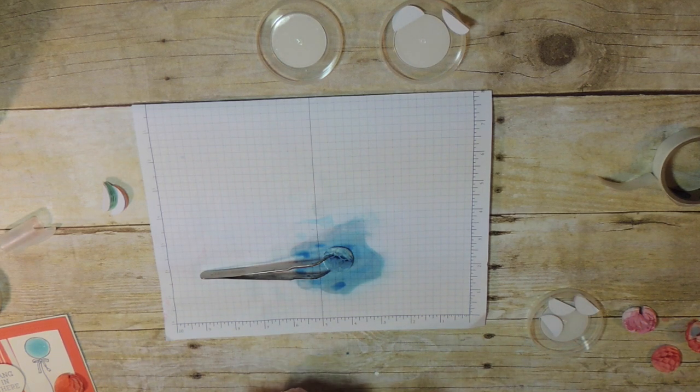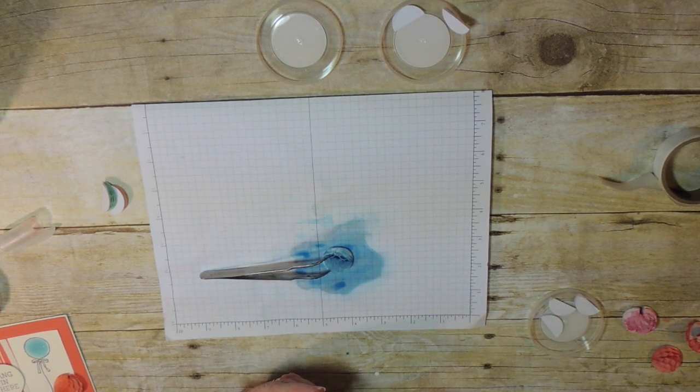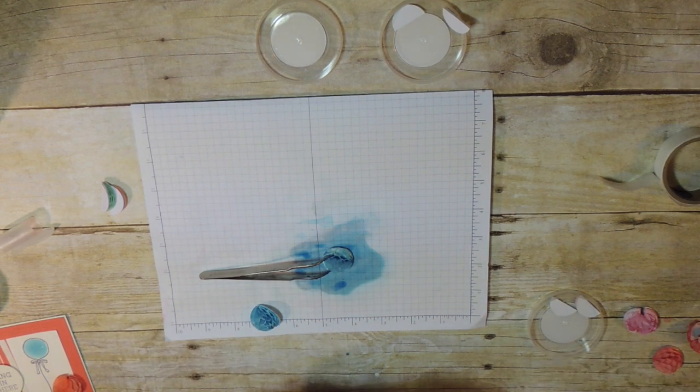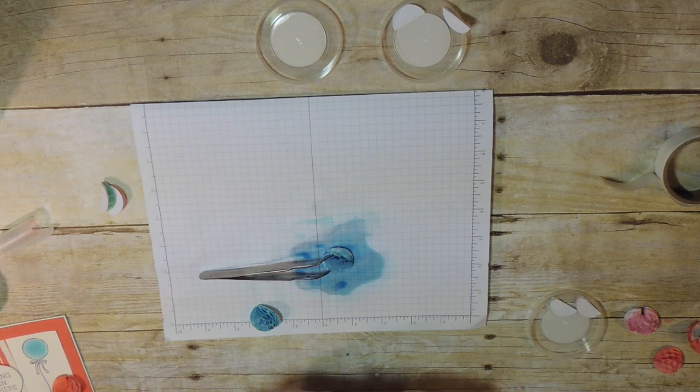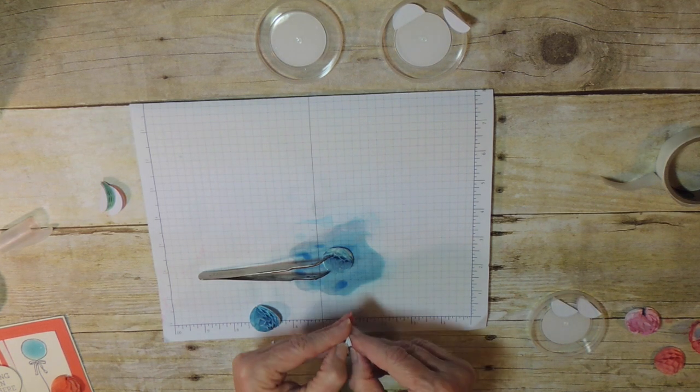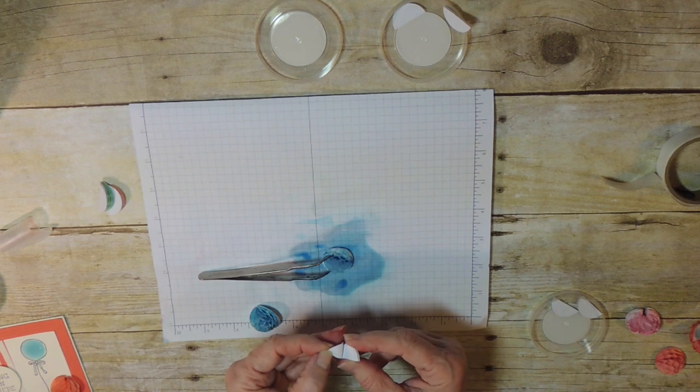Now, one side has a little piece of paper to protect the sticky side. One side is sticky. There it is, underneath there. That side's sticky.